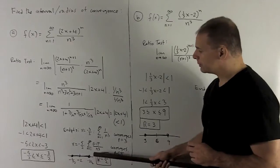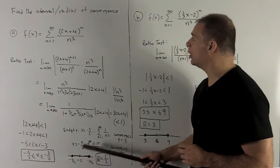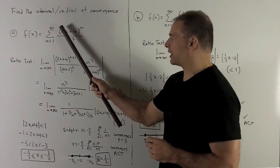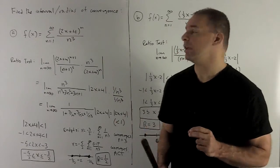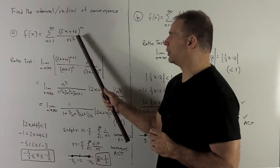I draw the picture. So notice our center is equal to minus 2. Your center is always going to be what you get if you set the expression under the power of n equal to 0.